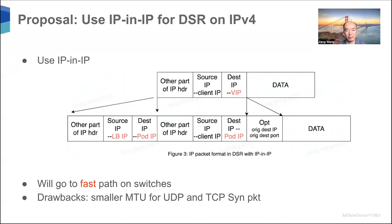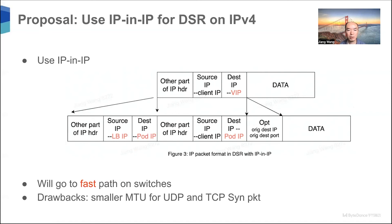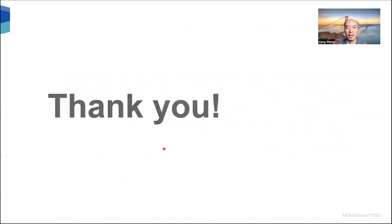The only drawback is that the MTU has to be smaller because we add another IP header of about 20 bytes. For TCP, because we only do this for TCP SYN packets, only the TCP SYN packet has the smaller effective MTU. For all other packets, the TCP packet size is still the same. And that's all. Thank you very much.